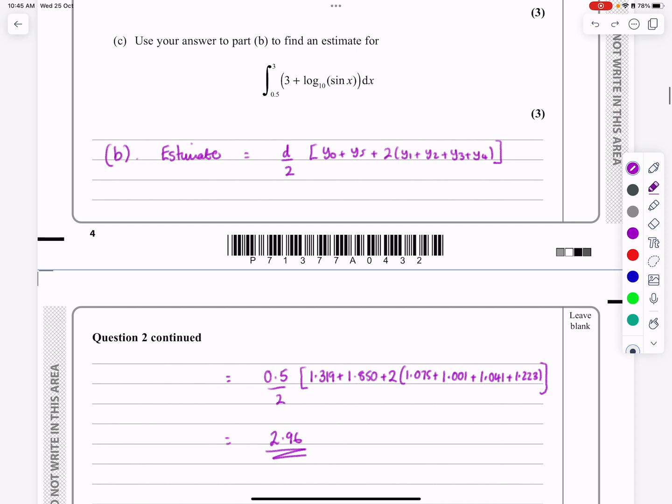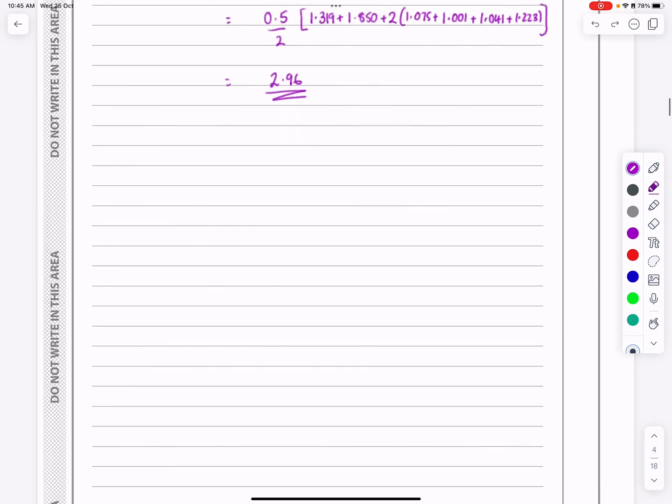And then part C. So part C says, use part B to find an estimate for this thing here. So what we need to do before we do anything for part C is we need to see that 3 plus log 10 sine x. How can I write that using 1 minus log 10? 1 minus log 10 sine x is what I've got. Okay, so I haven't got any choices. How can I make those two equivalent to each other? And a little bit of experience at doing these will be to see if you do 4 minus that, that's the same as 3 plus log 10 sine x. So now that I've got that,